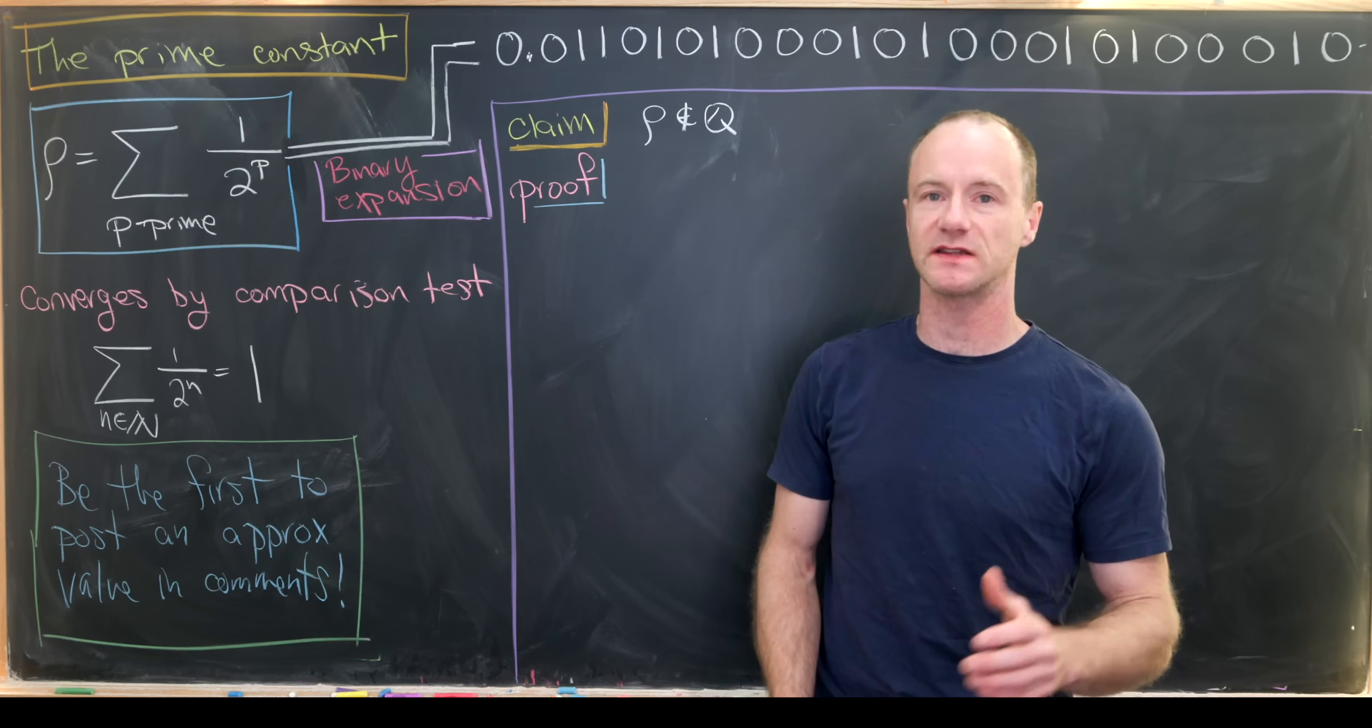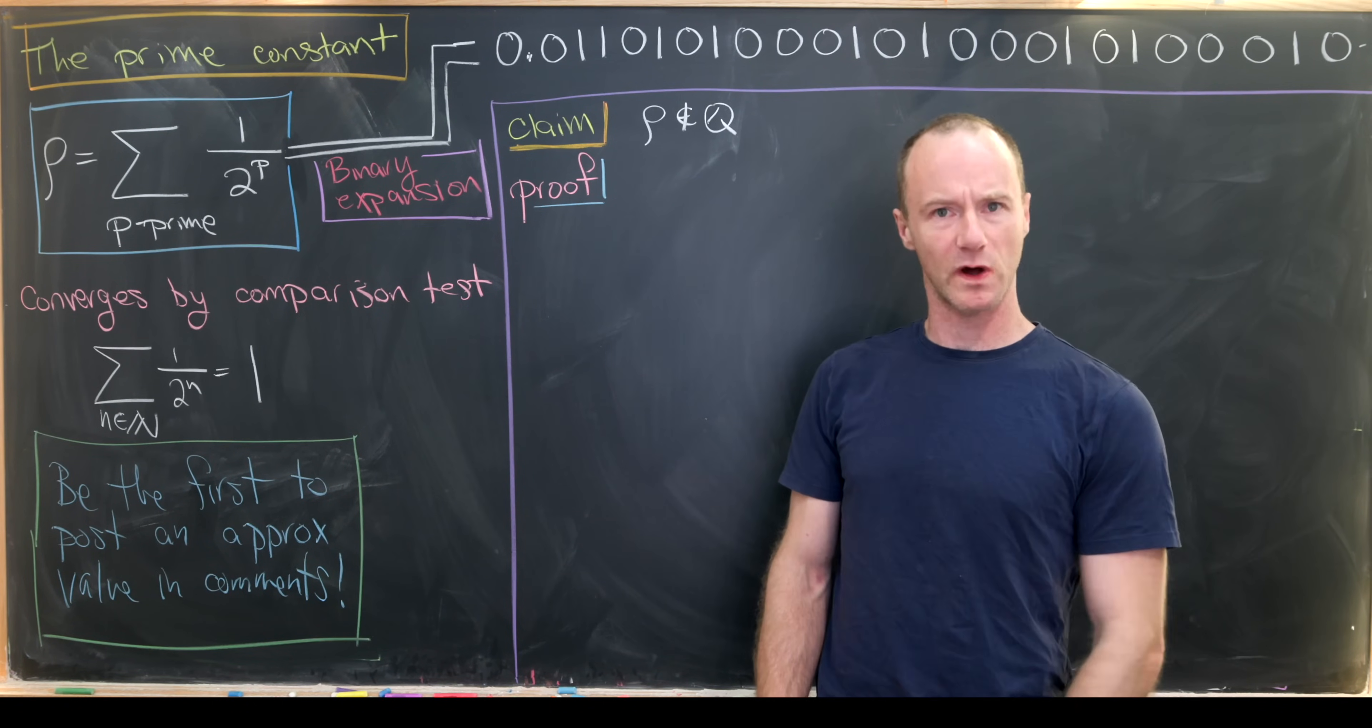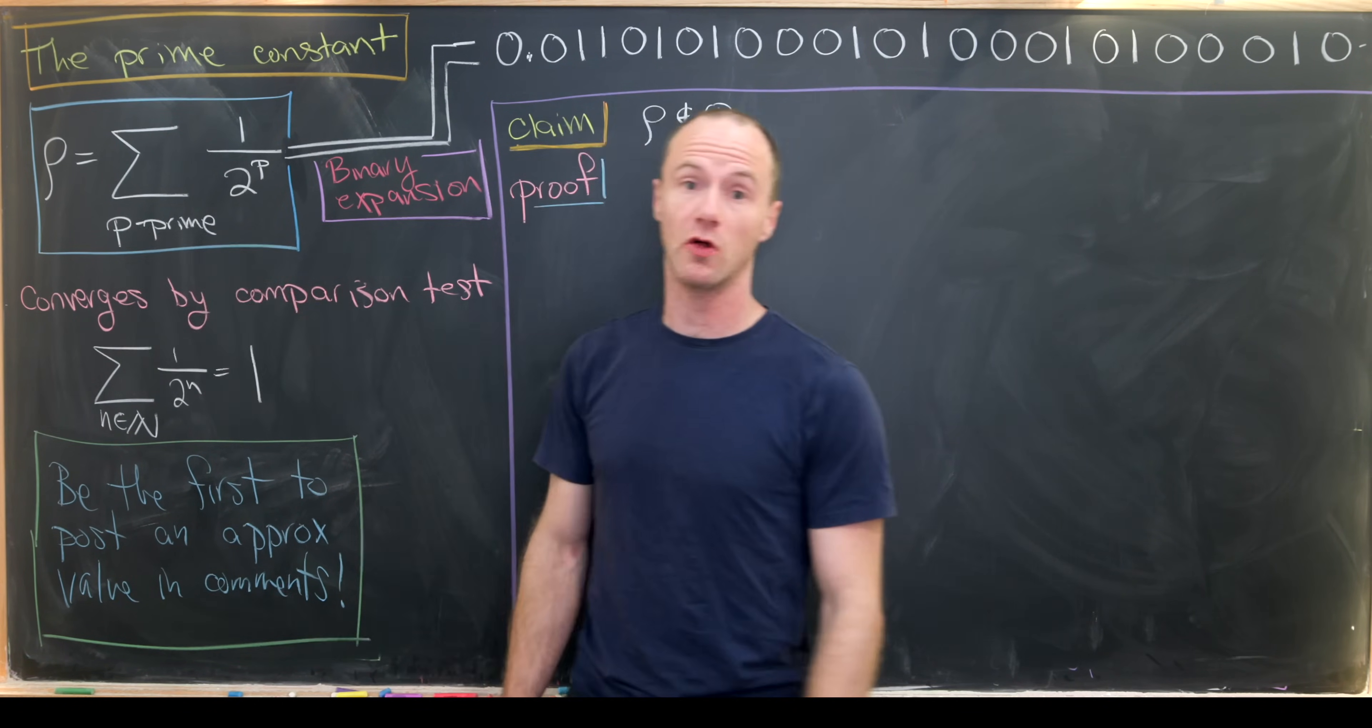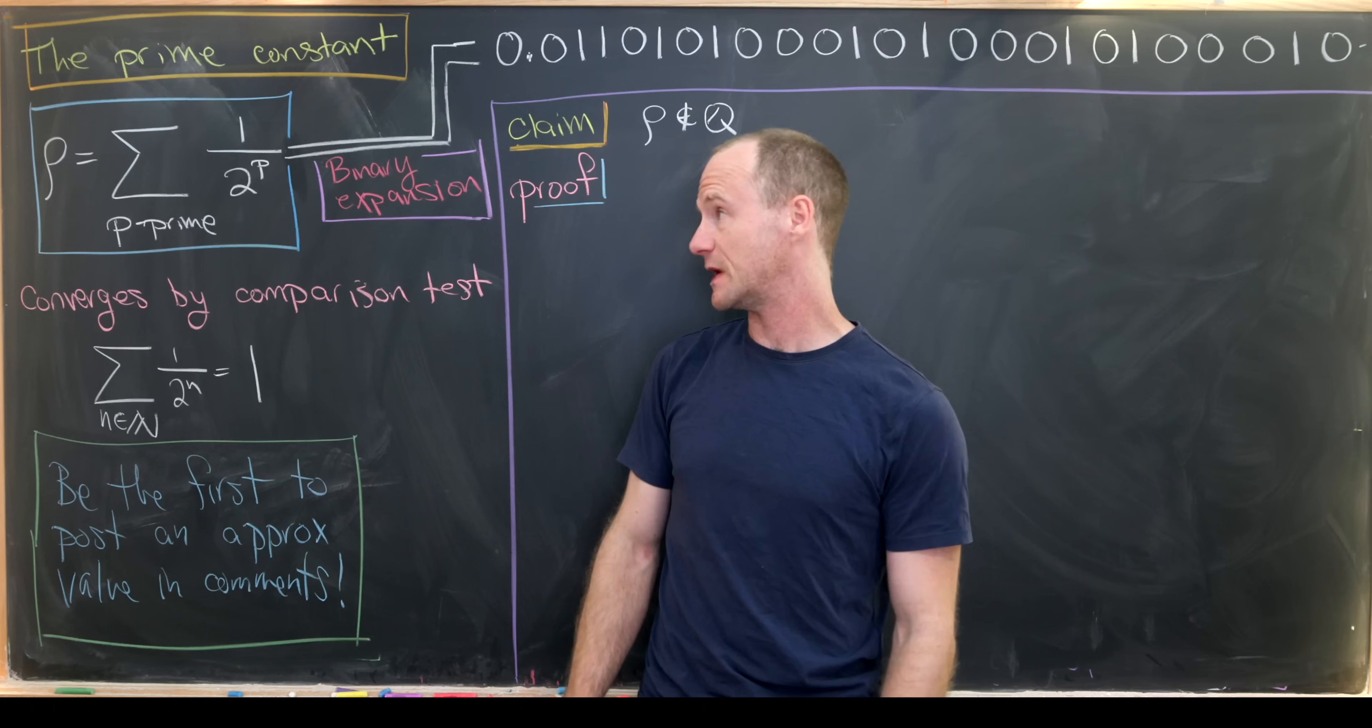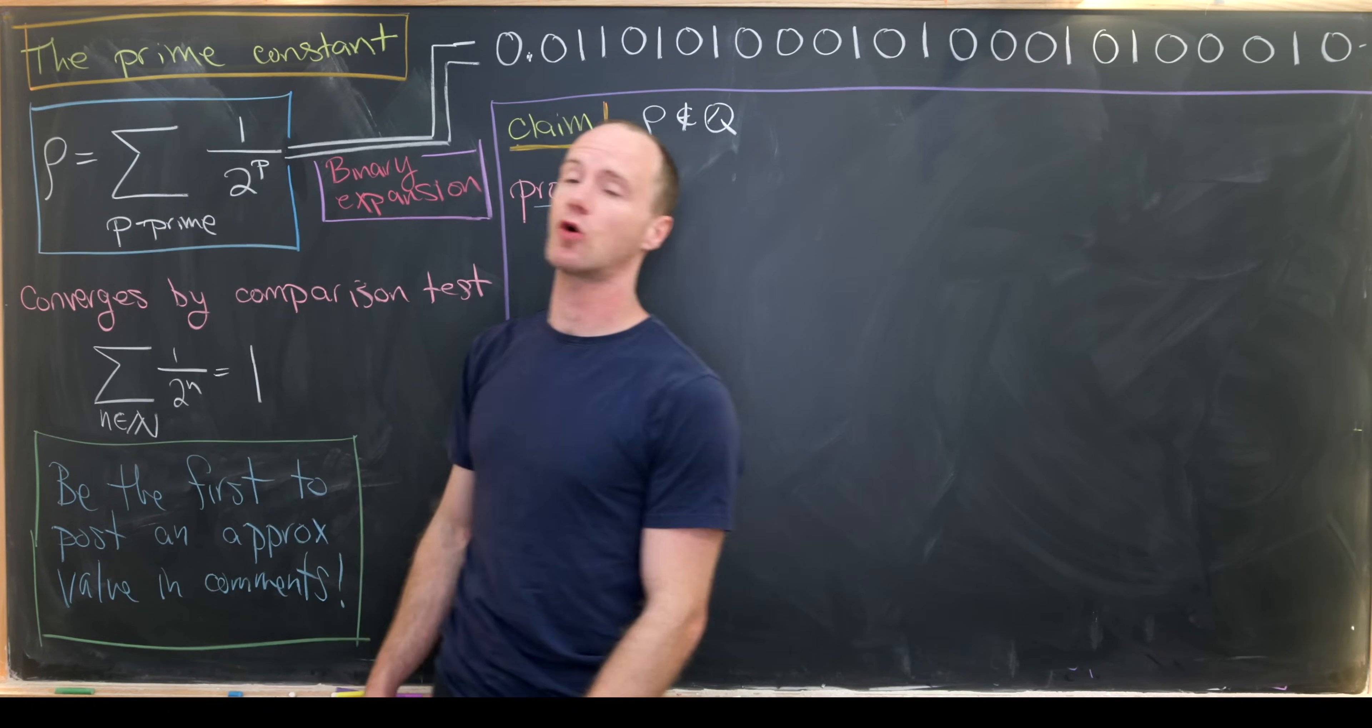I learned about a really interesting new constant today known as the prime constant. So what is the prime constant? Well, it's the sum over all prime numbers of 1 over 2 to the p. And it's generally denoted by this symbol rho.